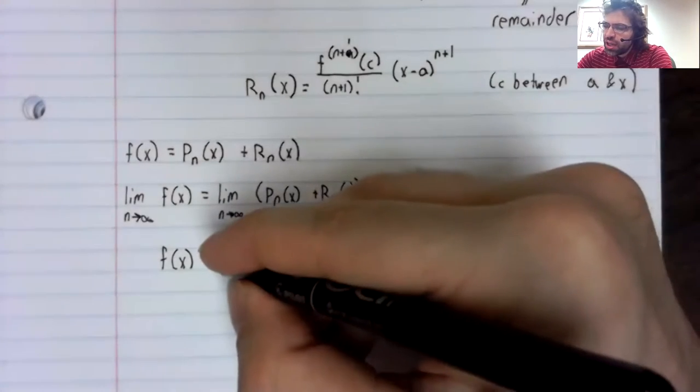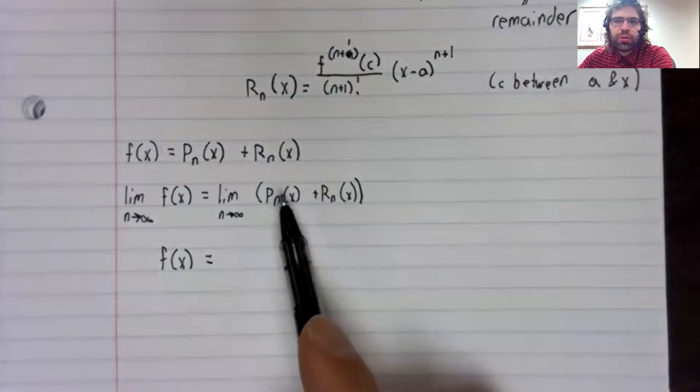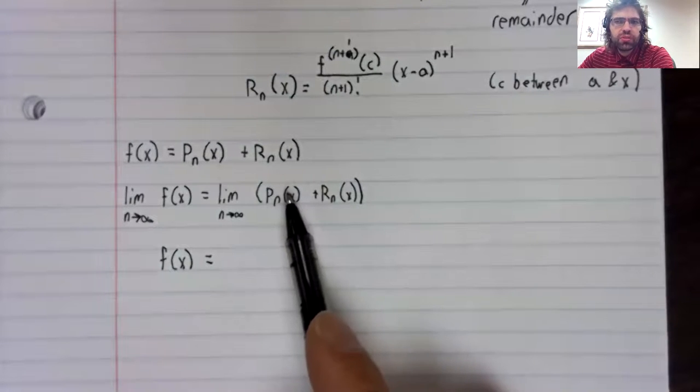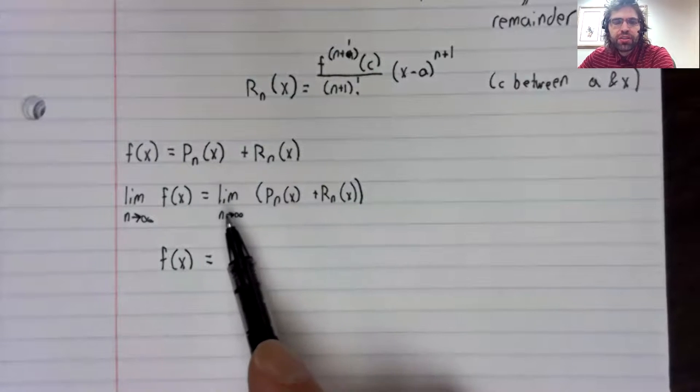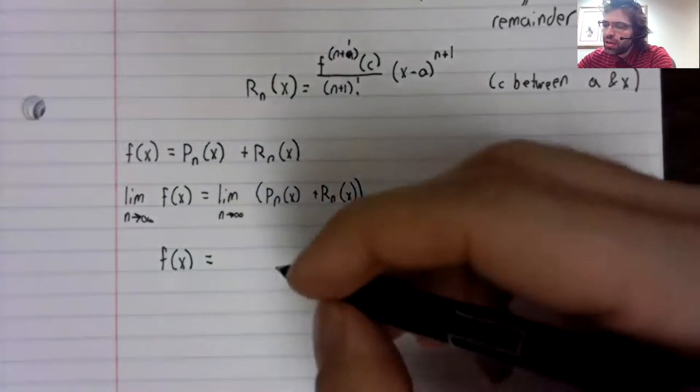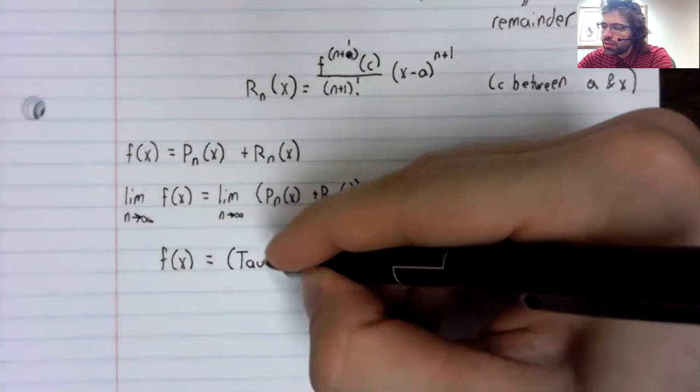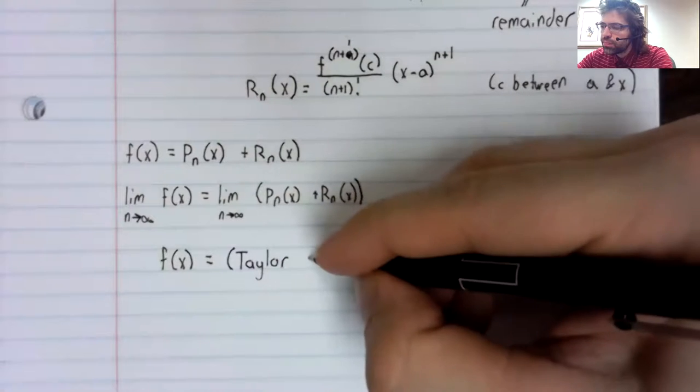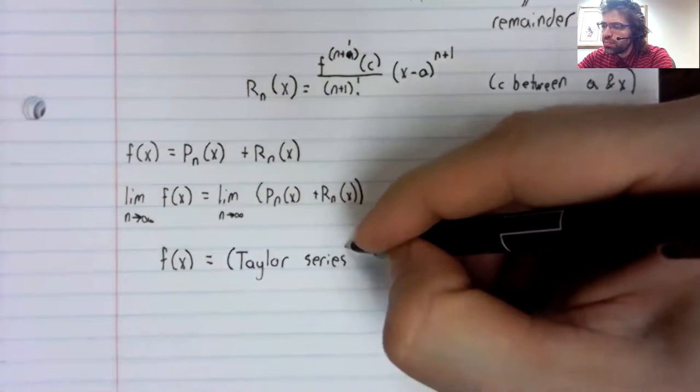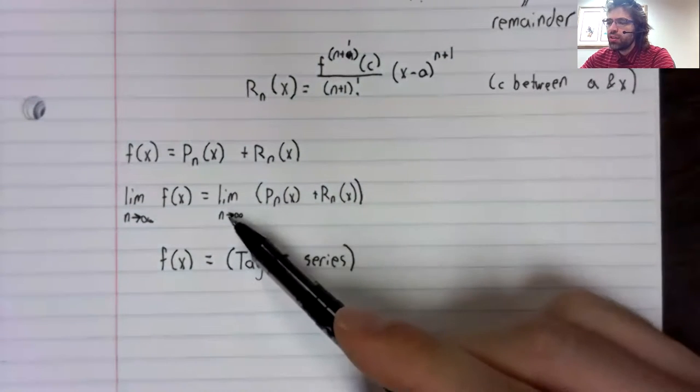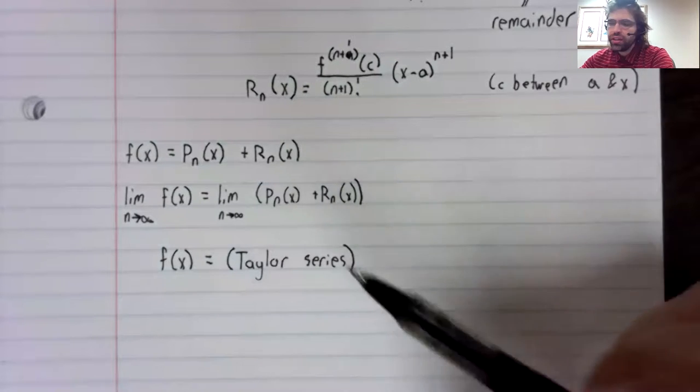On the right hand side, the Taylor polynomials are the partial sums of the Taylor series. And the limit as n goes to infinity of a partial sum is a series. So as n goes to infinity, this turns into this.